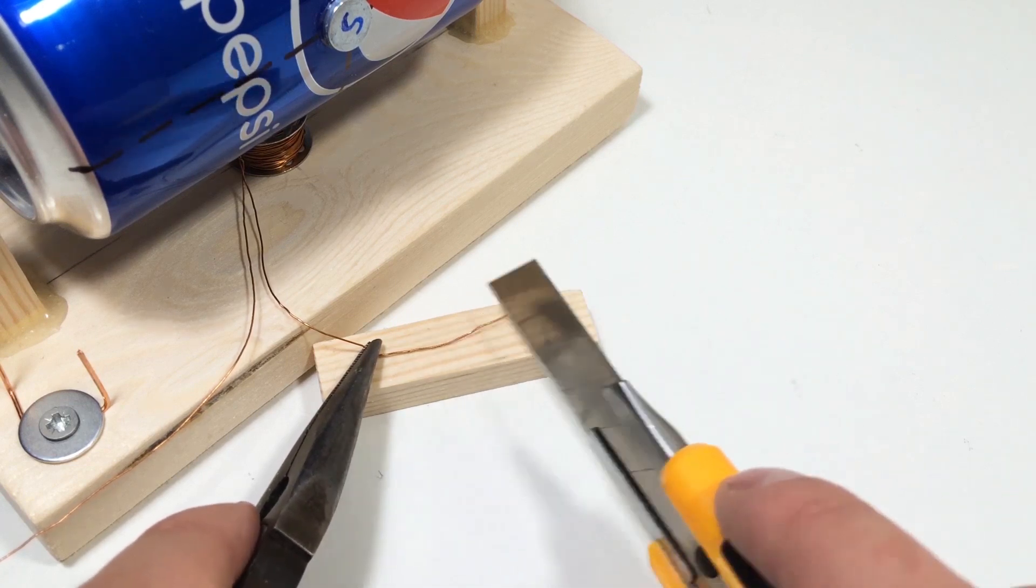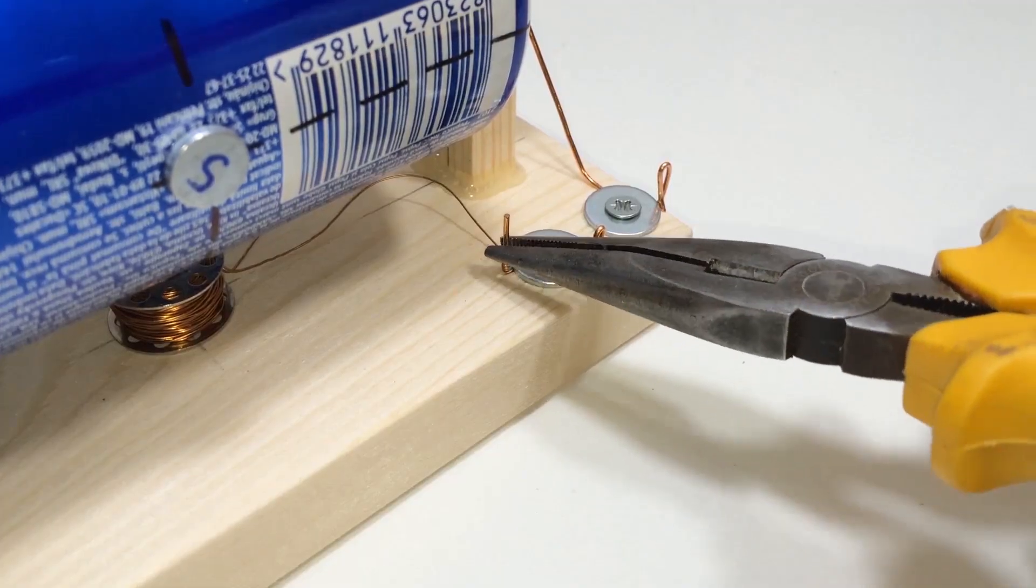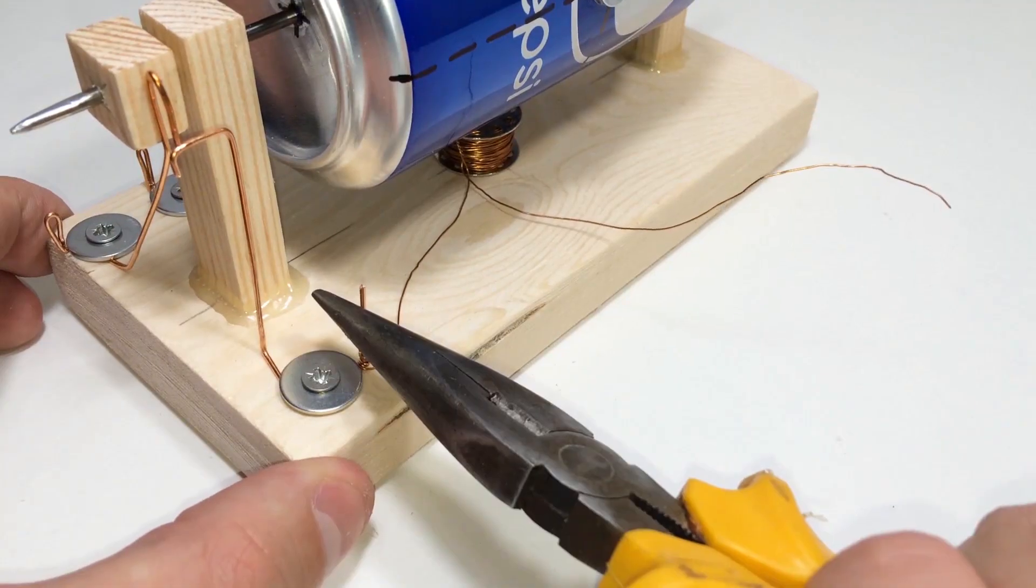Now connect the coil to the breaker. One side of the coil goes directly to the power source. The other side goes through the breaker contacts.